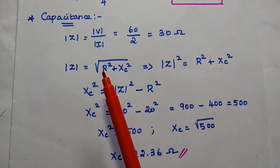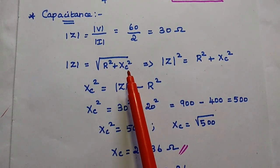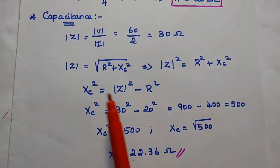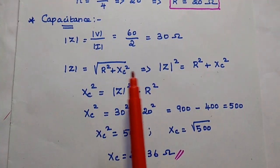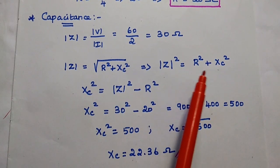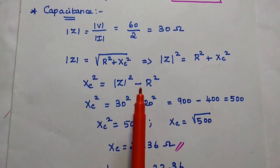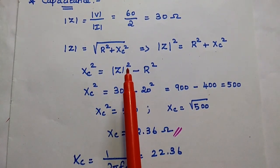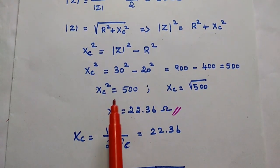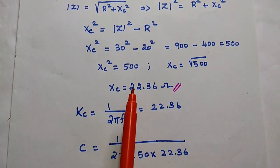Using the relation: modulus of Z squared equals R squared plus XC squared. We move R squared to the other side: XC squared equals Z squared minus R squared equals 30 squared minus 20 squared equals 900 minus 400 equals 500. Taking the square root on both sides gives XC equal to 22.36 ohm — the capacitive reactance.